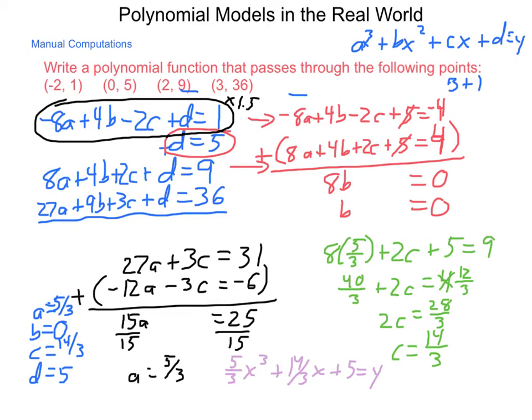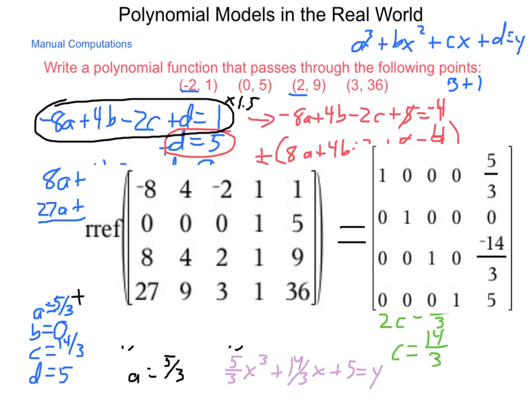Now, we can use technology for this. In unit 3, we talked about being able to use matrices to solve. And running this through a matrix calculator, I come out with this. So, my reduced row echelon form that we talked about, putting in all the coefficients in this augmented matrix, all the y value answers, and hit an enter, I receive this. a is 5 thirds, b is 0, c is negative 14 thirds, and d is 5.